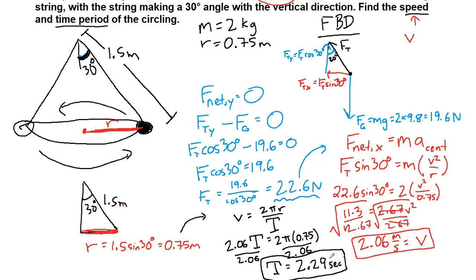So if we want to test this for ourselves, we can find a piece of string and a mass and actually have it go around and around at a 30 degree angle. In class we do a demonstration of this and we can kind of confirm for ourselves that a couple of seconds is a reasonable amount of time to go once around.